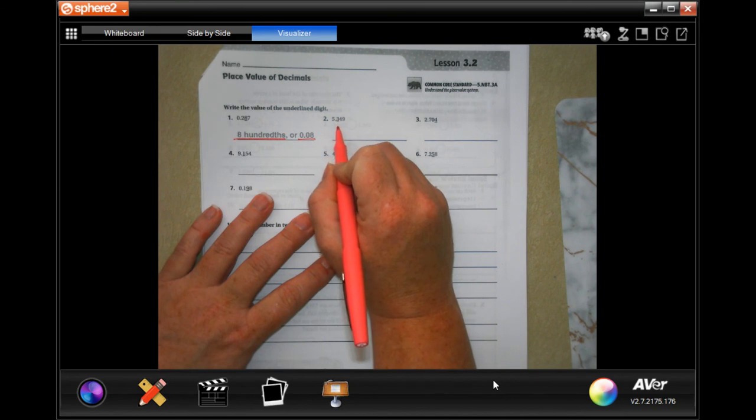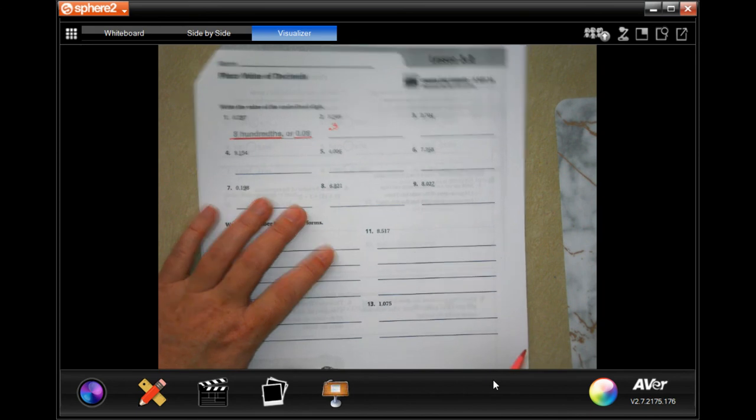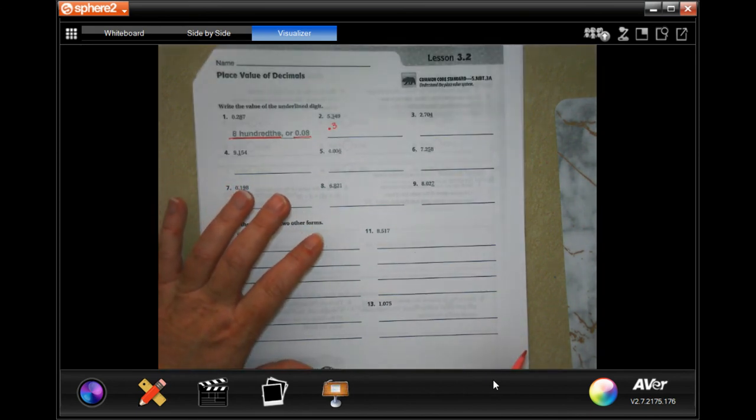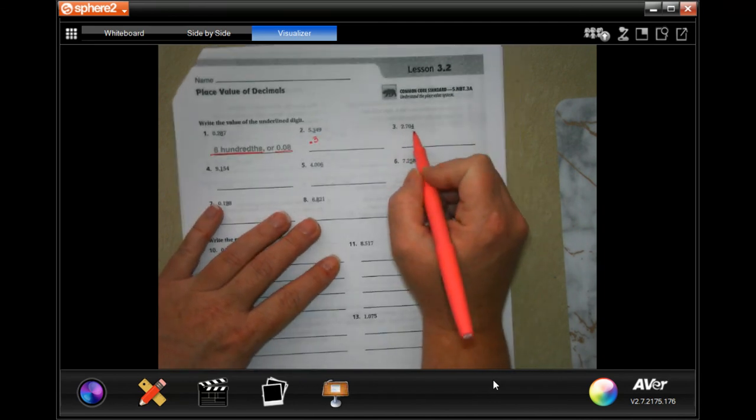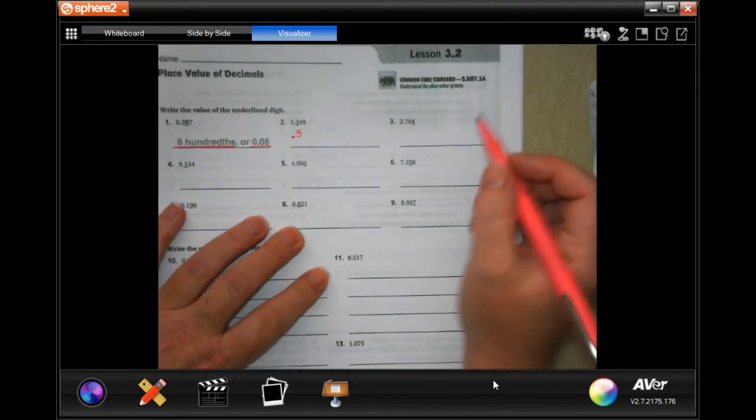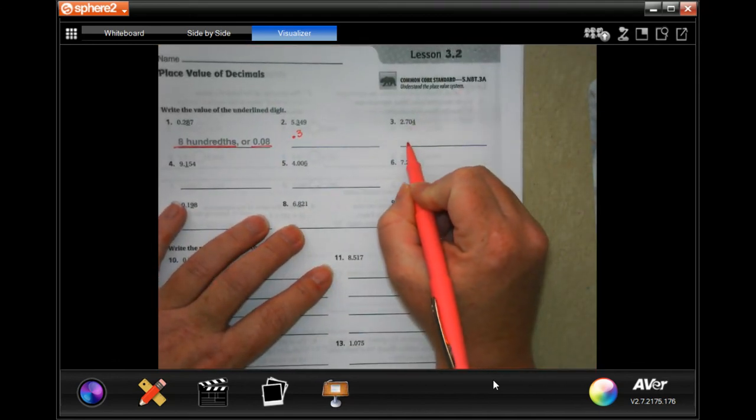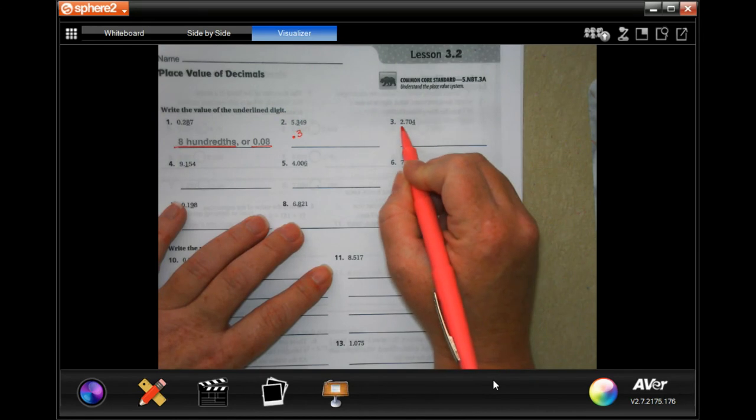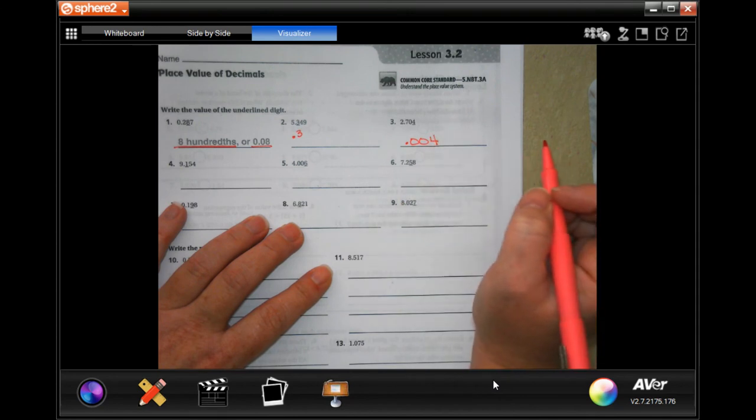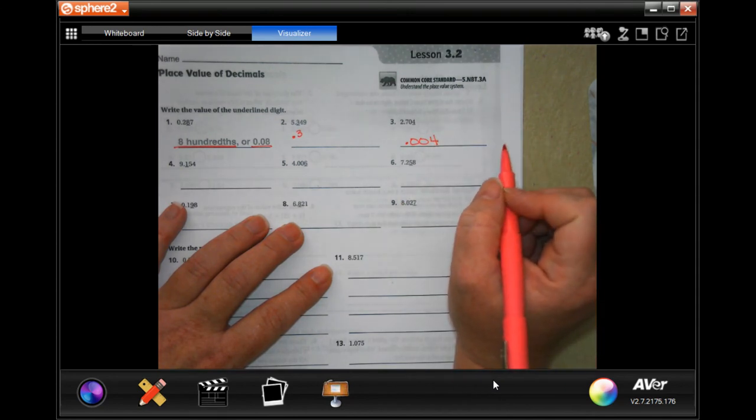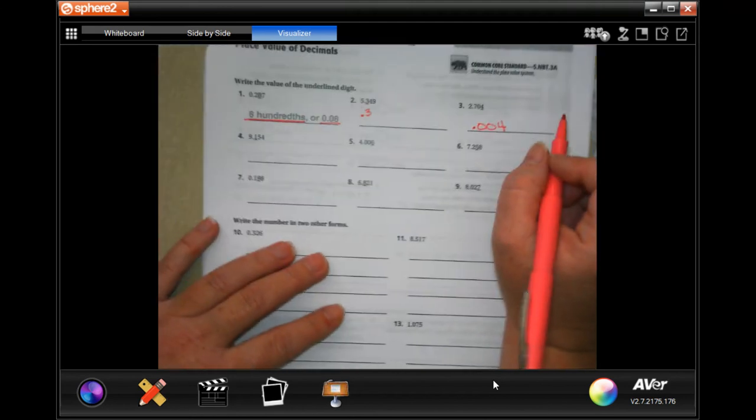So on this one it's a little bit more tricky because the four is the one that's underlined and it's all the way at the end, which means after the decimal. So we don't have to worry about the two, but after the decimal we need one, two placeholders and then the four. It's the four thousandth.